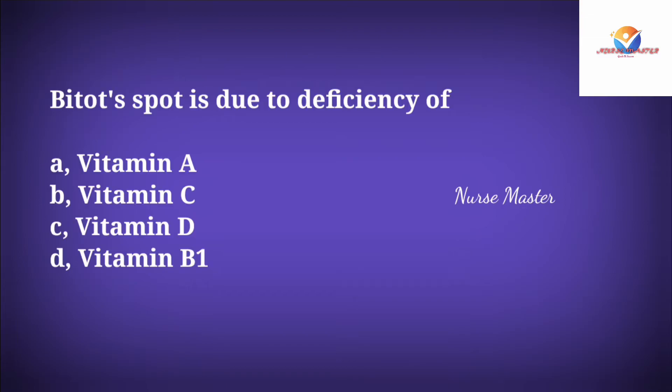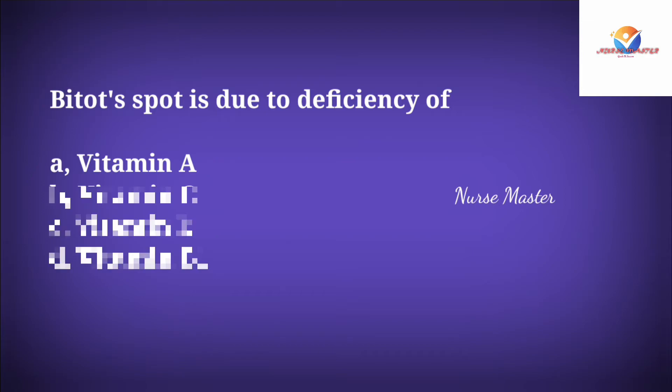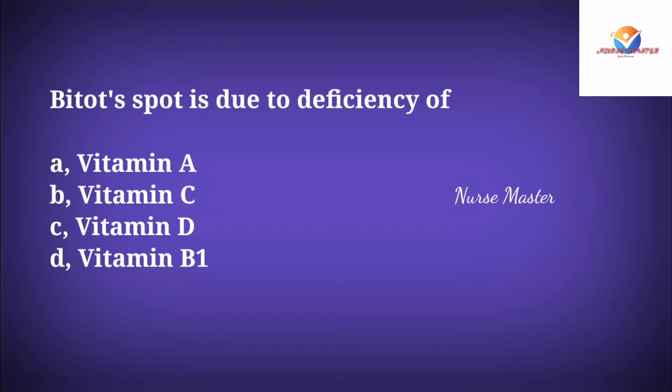Question: Bitot's spots are due to deficiency of which vitamin? Option A: Vitamin A. Option B: Vitamin C. Option C: Vitamin D. Option D: Vitamin B1. The correct answer is Vitamin A. Vitamin C deficiency causes scurvy. Vitamin D deficiency causes rickets in children and osteomalacia in adults. Vitamin B1 deficiency causes beriberi.